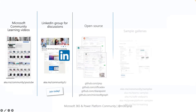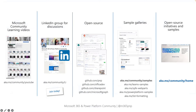Let's talk about what we have available. We have about a billion resources available and one link for all of them: aka.ms/community/home. You'll find videos on YouTube, a very active LinkedIn group where you can share what you've been working on and ask for help, and a ton of open source repositories with samples, tooling, controls — covering everything from Power Platform to SharePoint Framework, Graph, and Copilot.